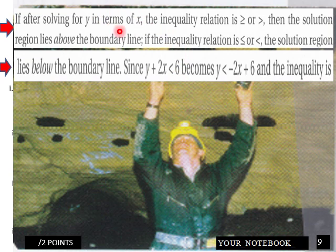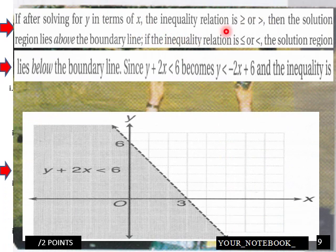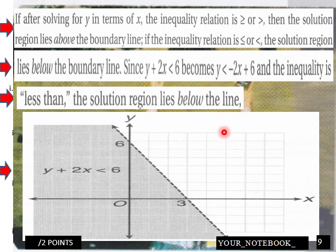If, after solving for y in terms of x, the inequality is greater than, then the solution lies above the boundary line. If the inequality relation is less than, pointing the other way, the solution region lies below the boundary line. Since this is a less than, it becomes this here, and the inequality is less than, the solution region lies below the line. It's a less than, so it lies below.